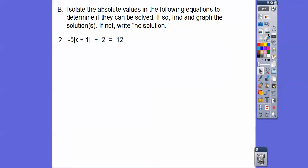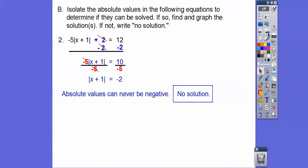Here we're going to go minus 2, minus 2, divide by negative 5. All of a sudden we've got an absolute value equals a negative number. No solution.